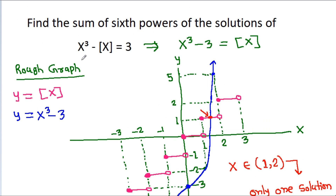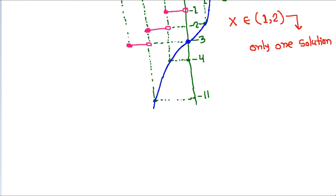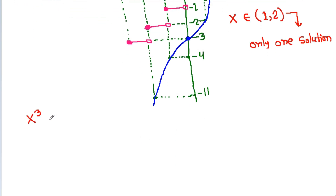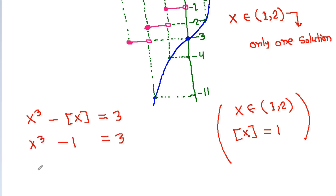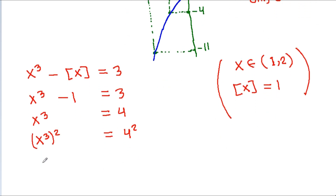We have x cubed minus greatest integer of x is equal to 3, and x belongs to the interval from 1 to 2. That means greatest integer of x will be 1. So x cubed minus 1 equals 3, giving x cubed equals 4. Then x to the power 6 — that is (x cubed) squared — equals 4 squared, which is 16.